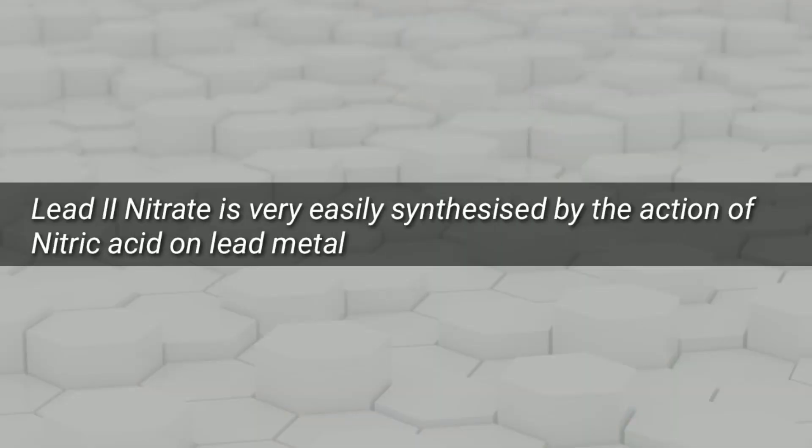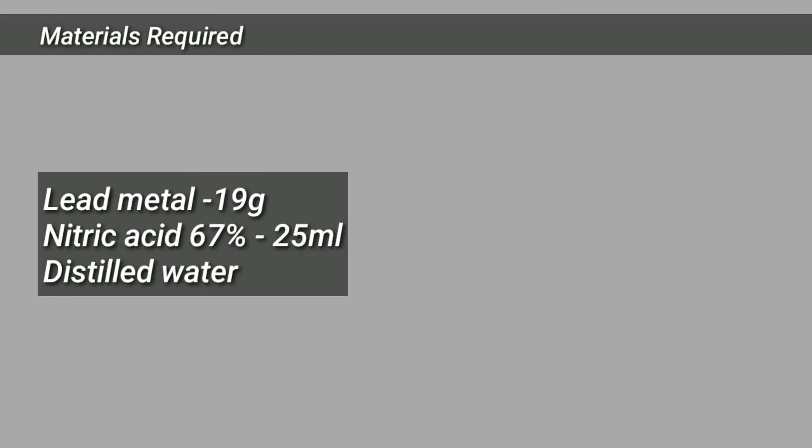Lead(II) nitrate is very easily synthesized by the action of nitric acid on lead metal, especially dilute nitric acid. We will not be going according to the exact stoichiometry, as we need a little excess of nitric acid to prevent the formation of basic lead nitrate.